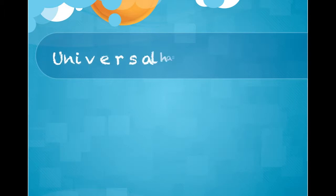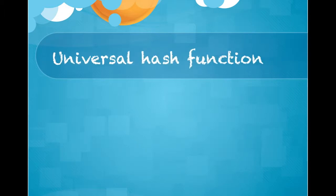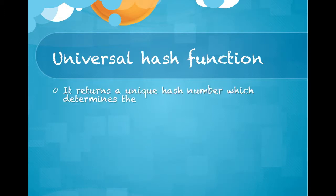What is a universal hash function? A universal hash function is a function that returns a unique hash number which determines the bucket where the objects will be stored.